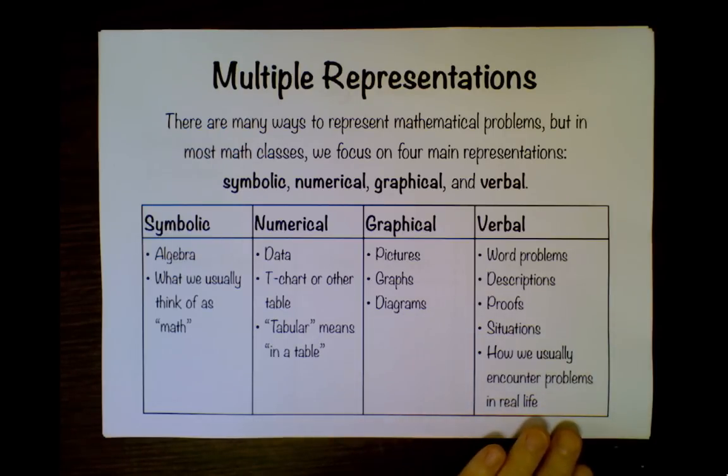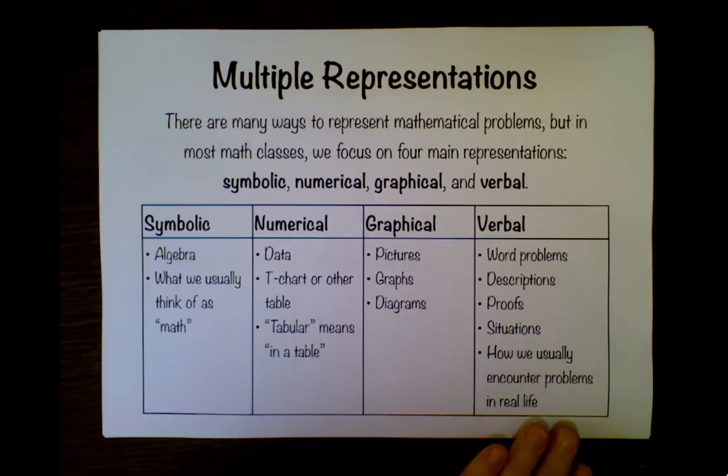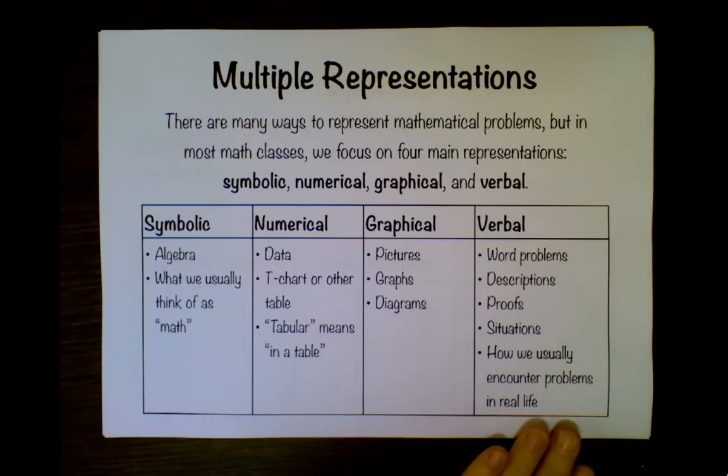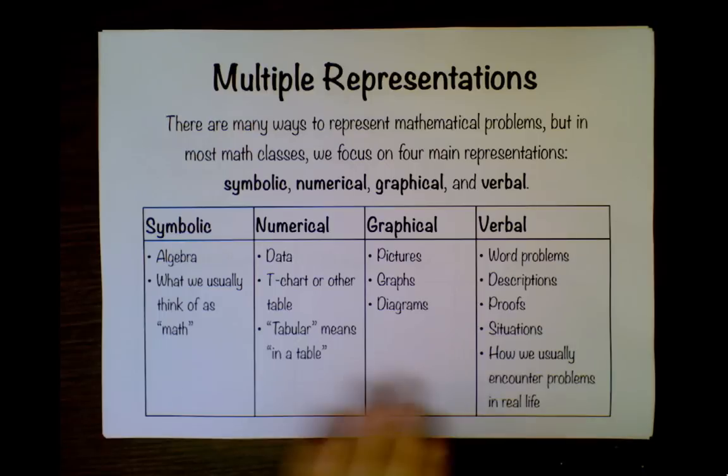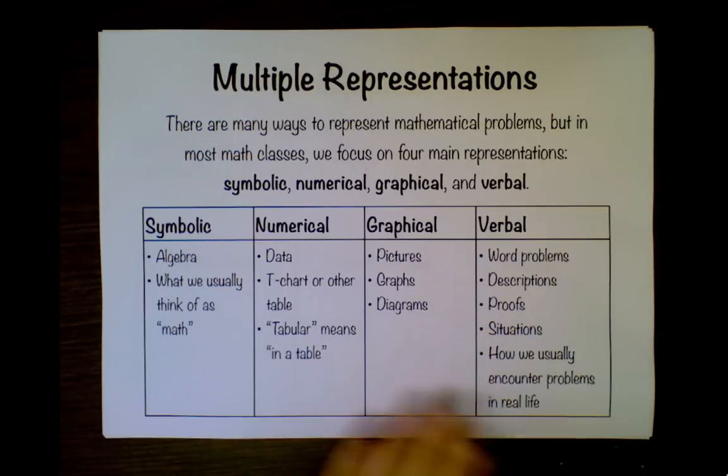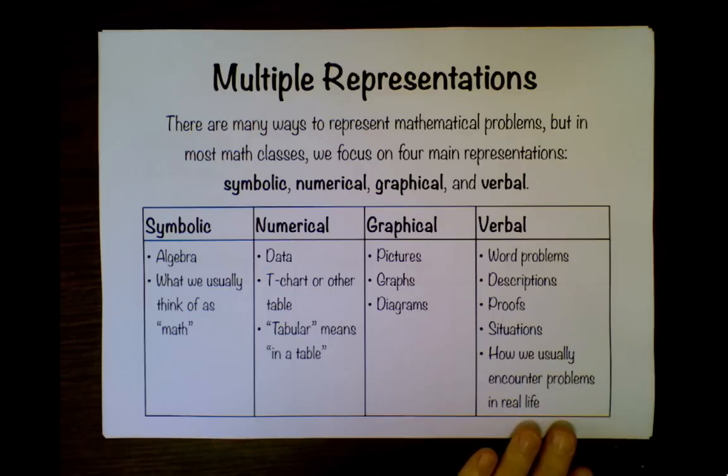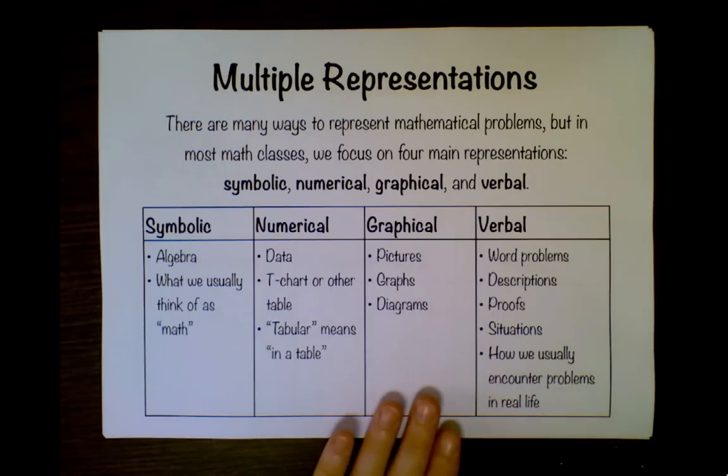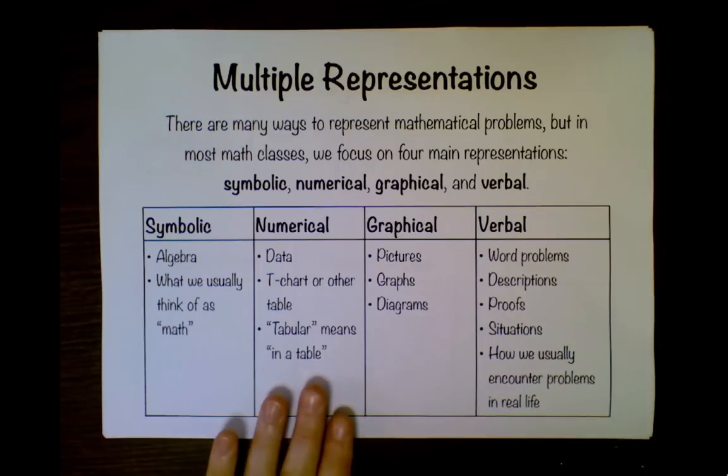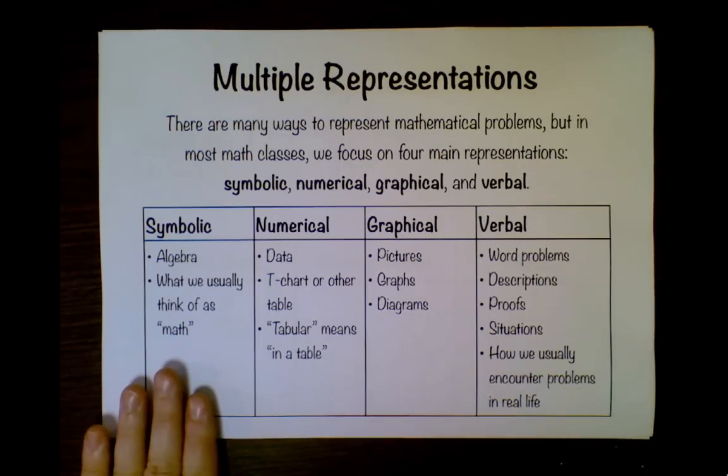There's my cat trying to participate in this exciting process. There's verbal, which is word problems, descriptions, proofs, situations. This is how we usually encounter problems in real life. Something to focus on is being able to transfer between one and the other. For example, often in real life we encounter word problems. We need to be able to get that into a graph or a table or algebra so that we can solve the problem.